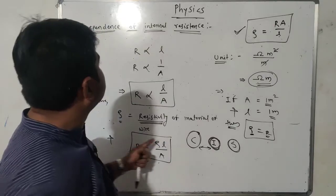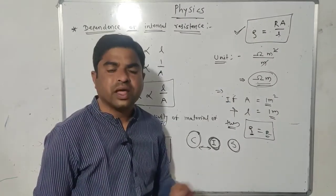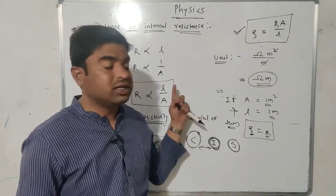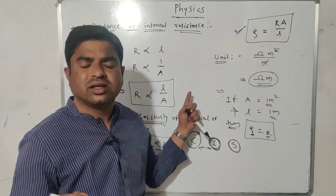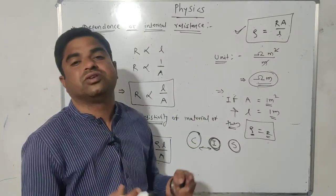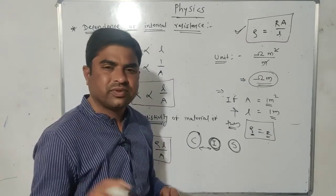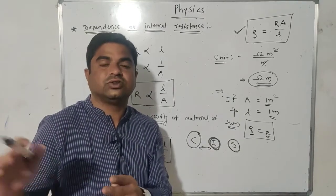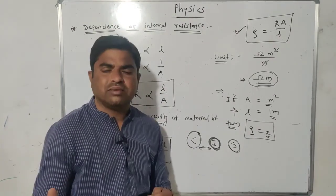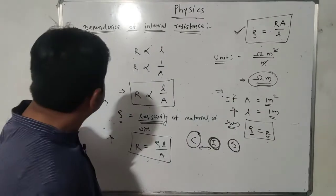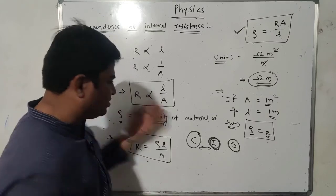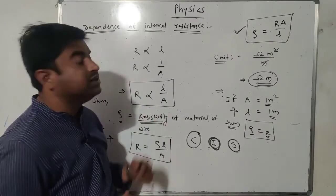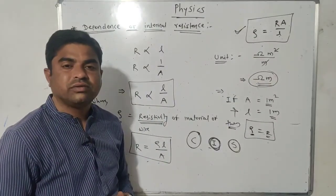These are the main factors on which internal resistance of a wire depends. Along with these three factors, temperature also affects internal resistance — if the temperature of a wire increases, it also increases the resistance. However, this dependence of resistance on temperature is beyond the scope of the current syllabus. This concludes the topic of dependence of internal resistance. Thank you.